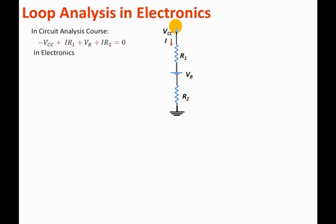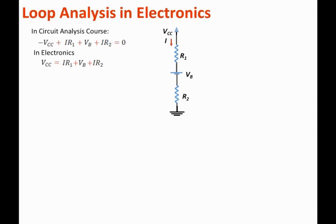The way we write loop equations in electronics is: Vcc, the top supply voltage, equals the sum of the voltage drops. This is a very important concept. Vcc equals the sum of the voltage drops across R1, Vb, and R2. The sum of those voltage drops must equal Vcc by Kirchhoff's Voltage Law. So we write: Vcc equals I·R1 plus Vb plus I·R2. That is the electronics way to write the loop equation — the top voltage equals the sum of the voltage drops.